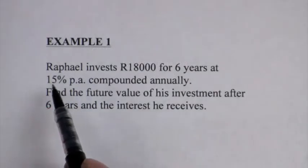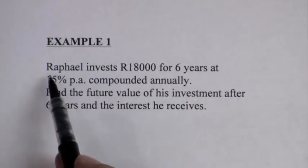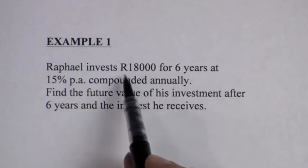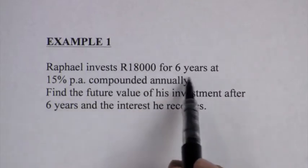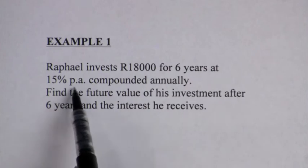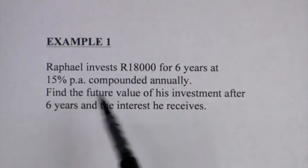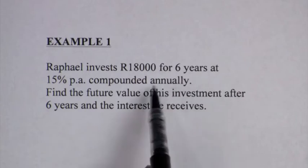The first example on compound interest says that Raphael invests 18,000 rand for six years at 15% per annum, that PA stands for per annum, compounded annually.